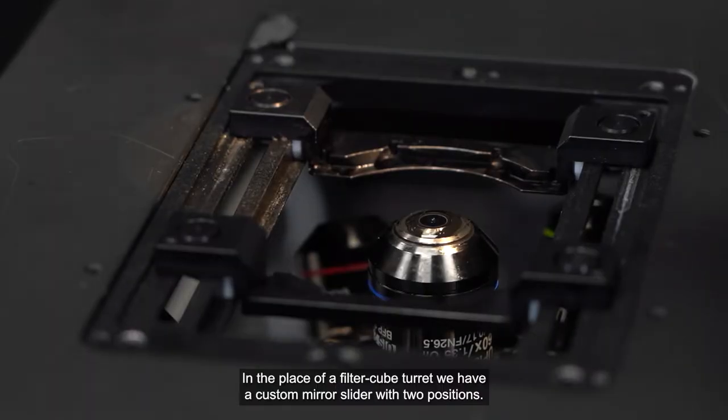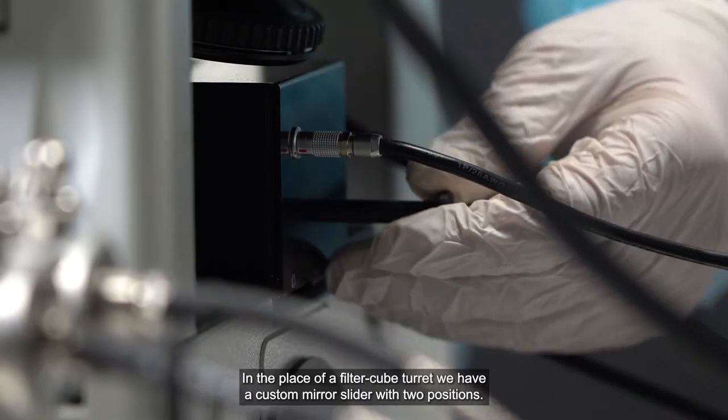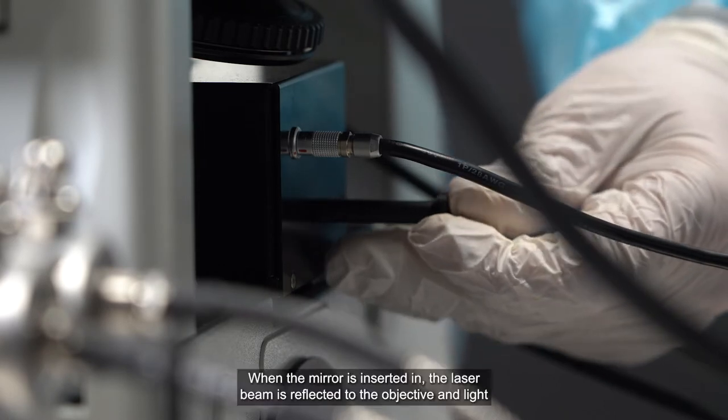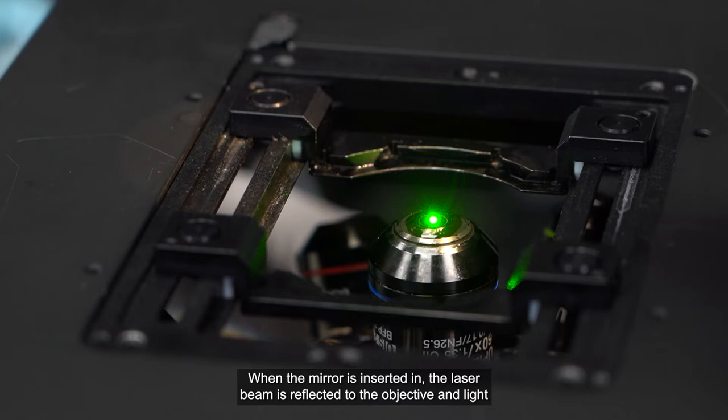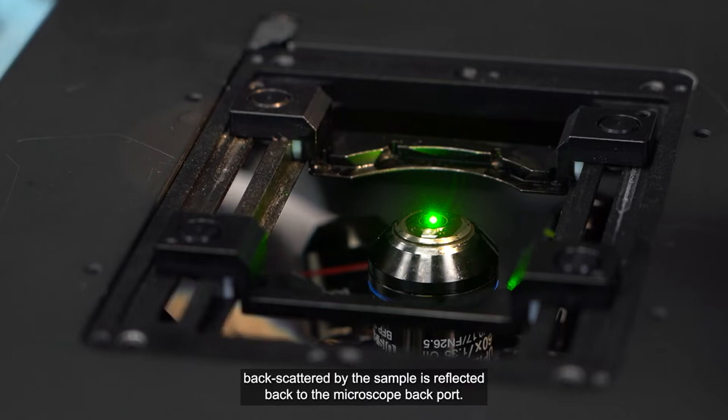In the place of a filter cube turret, we have a custom mirror slider with two positions. When the mirror is inserted in, the laser beam is reflected to the objective and light backscattered by the sample is reflected back to the microscope back port.